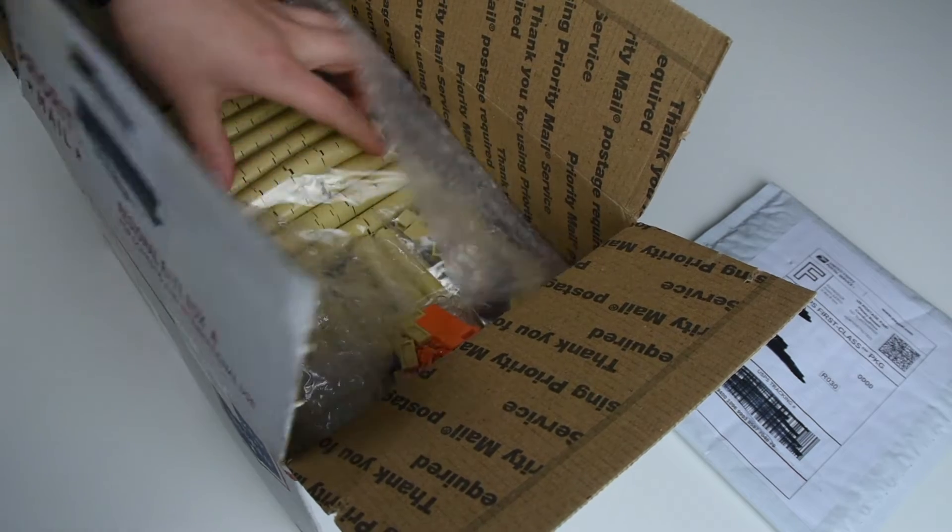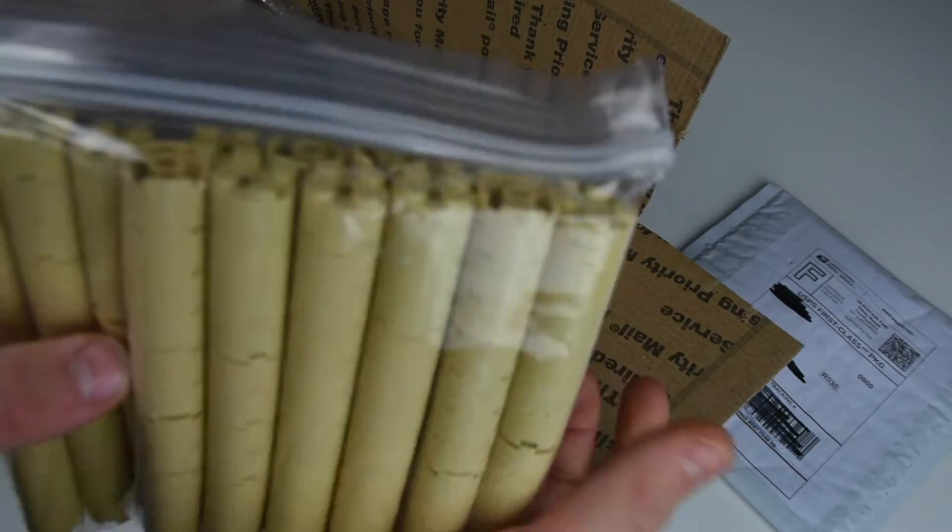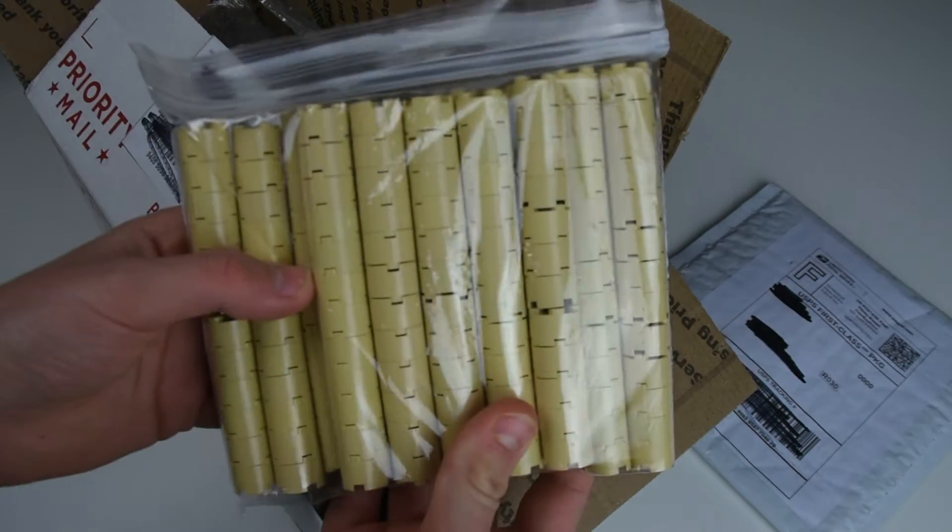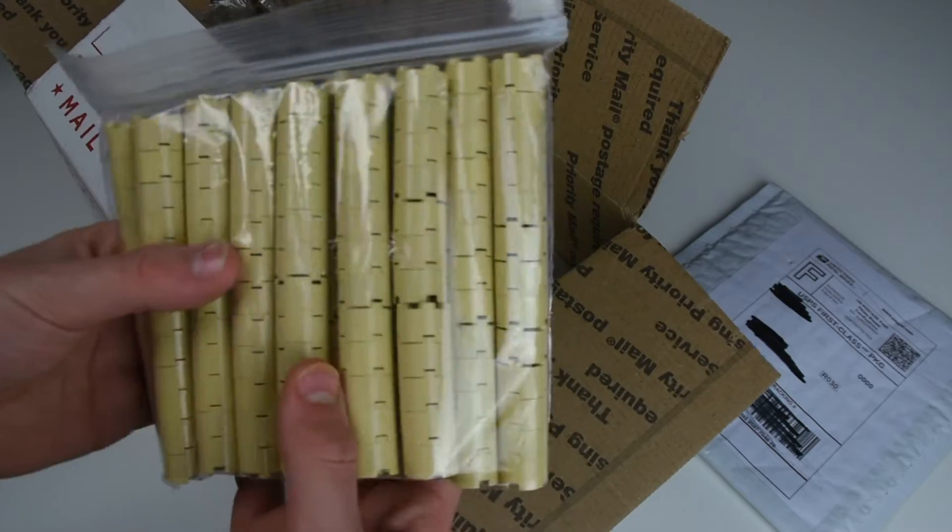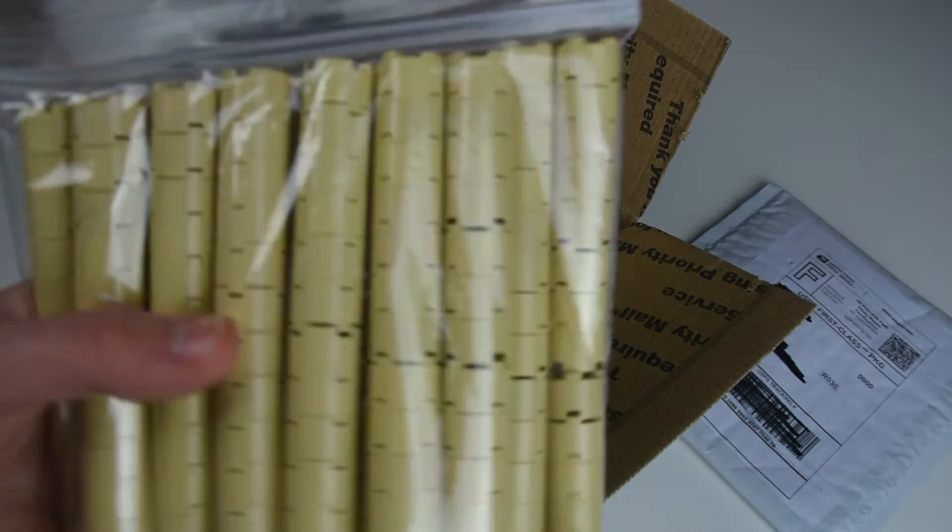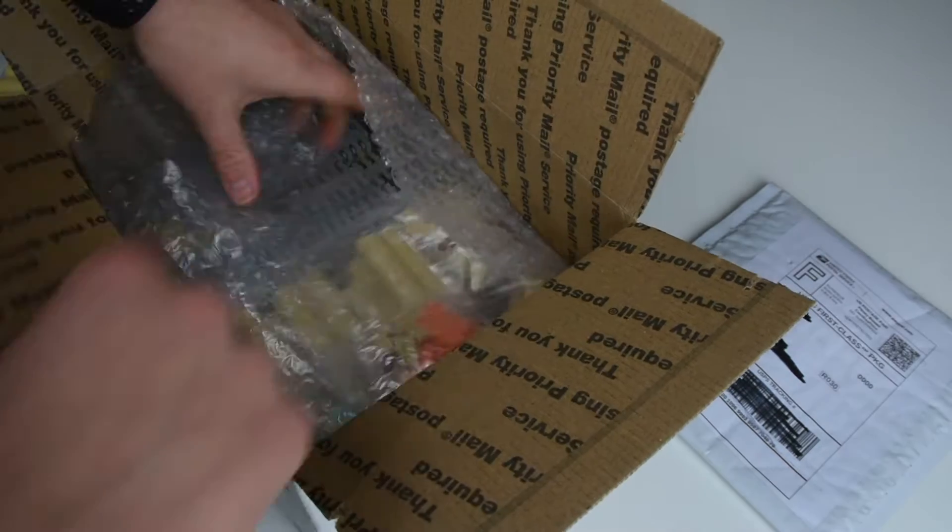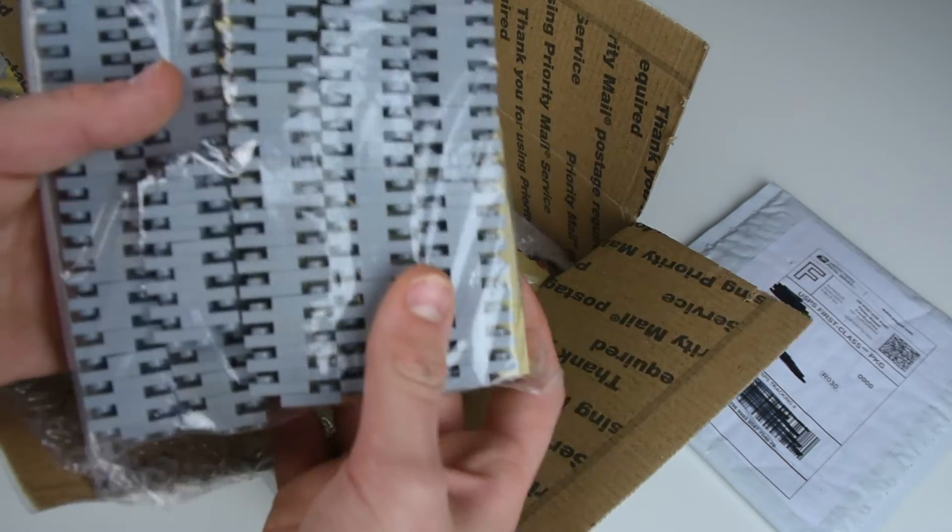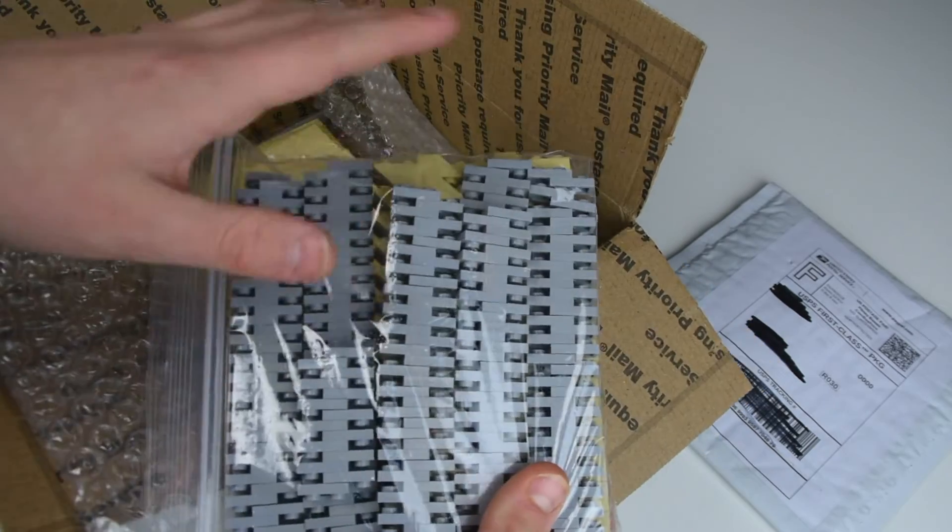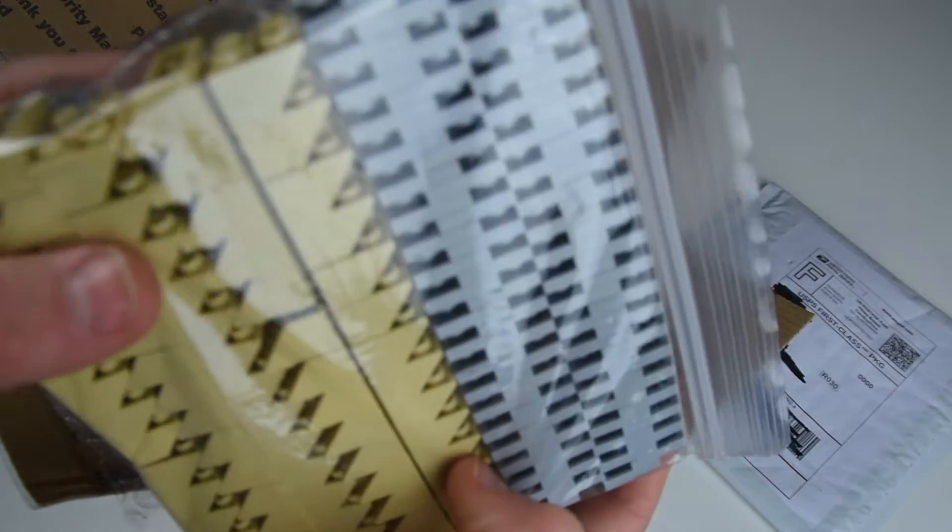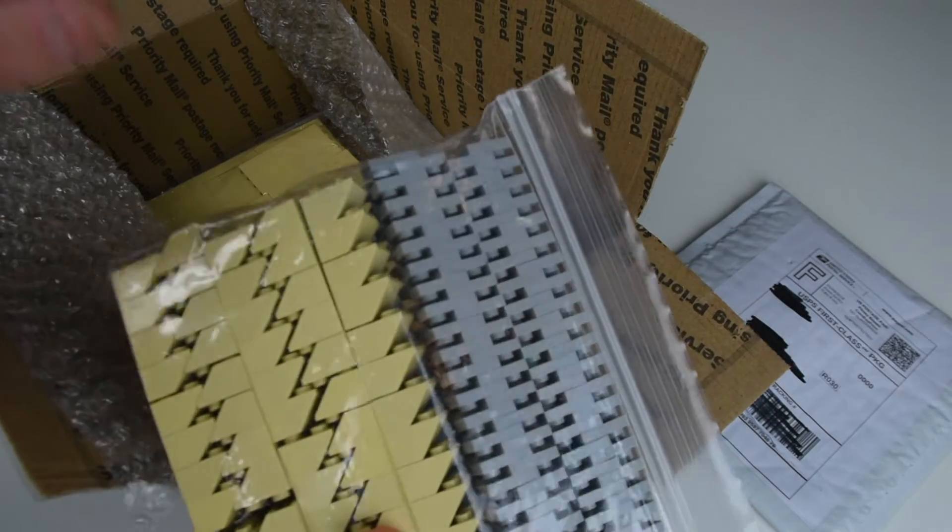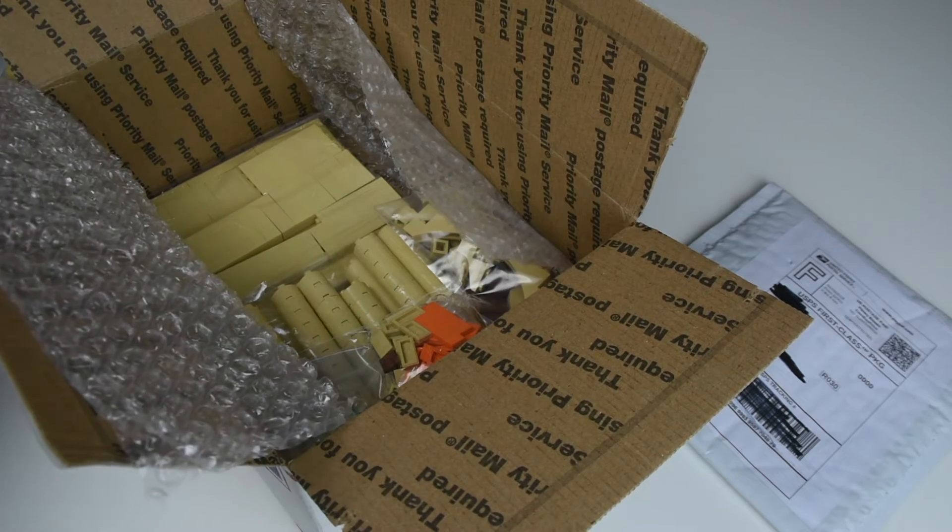We got tons of these, I believe it's 300 of these 2x2 tan round cylinder pieces for the columns on the back side of the palace. Here's a bunch of those already stacked, which is going to save me some time. I also got 300 of these light bluish-gray 1x2 plates for the ground to fill in the gaps.